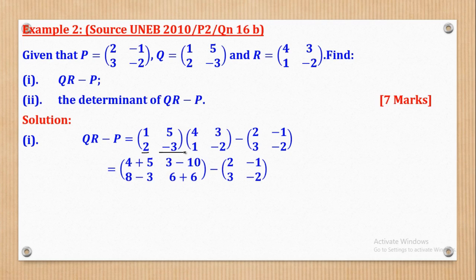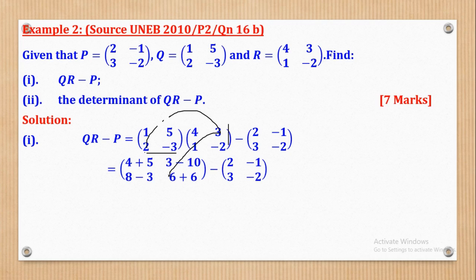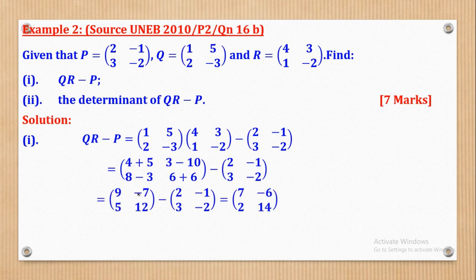Continuing the multiplication: second row, first column gives 2 times 4 = 8 plus negative 3 times 1 = negative 3; second row, second column gives 2 times 3 = 6 plus negative 3 times negative 2 = positive 6. After simplifying the product matrix is [9, -7; 5, 12].